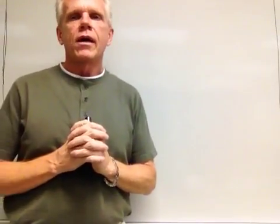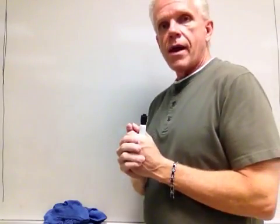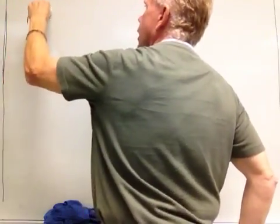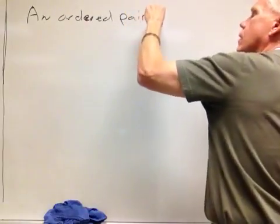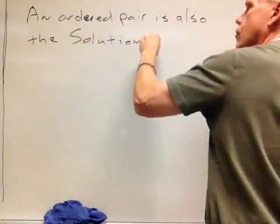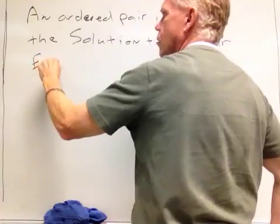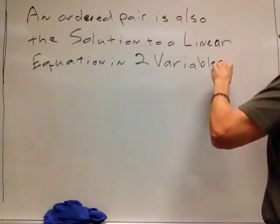Hey guys, we're back. I want to talk a little bit more now in section 11.1 about ordered pairs. We said last time that we talked about ordered pairs as being points that we could plot on a graph. This time I want to talk about ordered pairs in a different way. An ordered pair is also the solution to what we call a linear equation in two variables.